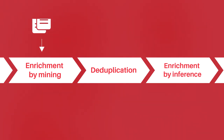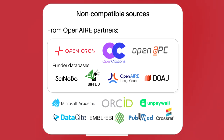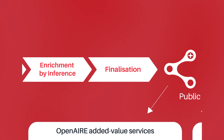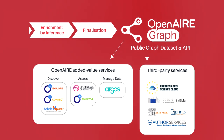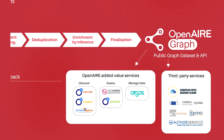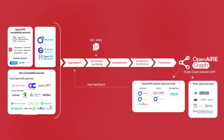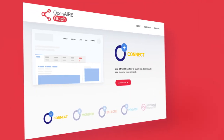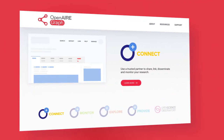Subsequently, the records are further enriched with additional information, and relevant indicators are incorporated based on external services like BIP Finder and usage counts. A finalization process improves the overall quality of the GRAPH data. Lastly, information from the GRAPH is indexed and accessible along the OpenAIR services.